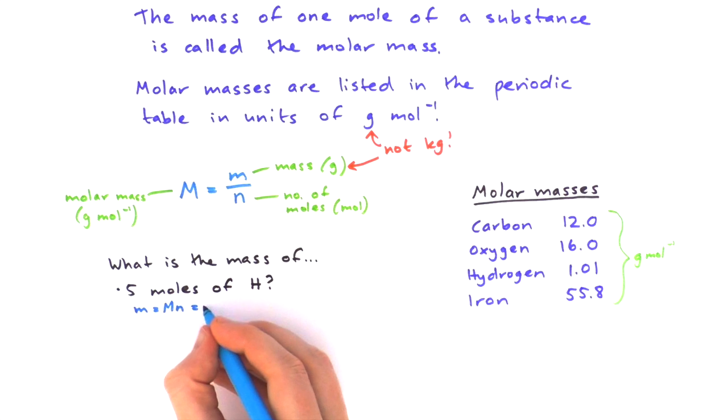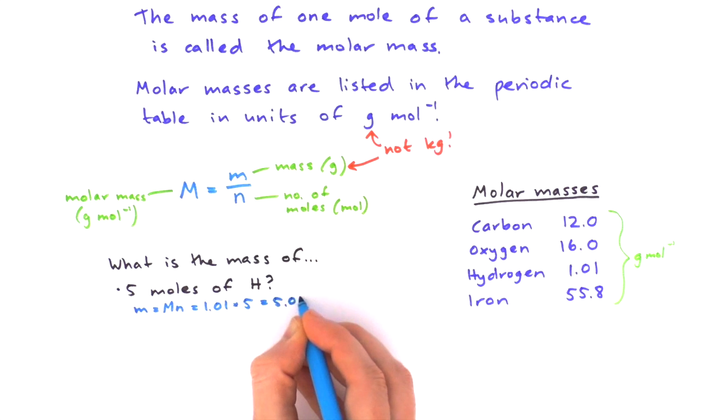We put our numbers in: 1.01 times 5, and that gives us 5.05 grams for hydrogen.